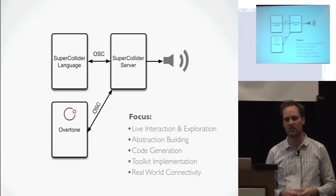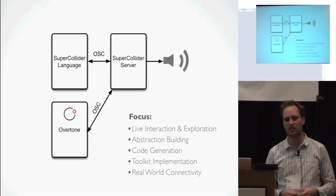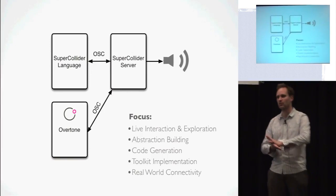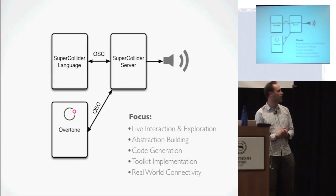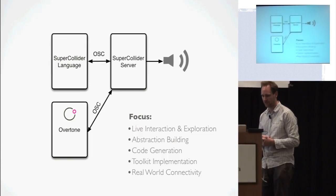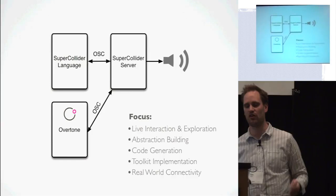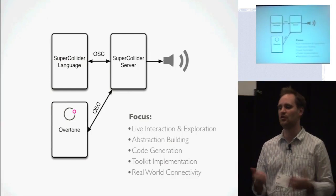We have a slightly different focus — we're interested in live interaction and exploration. We want to use the REPL to actually explore and work with sounds, think about different kinds of abstractions, do code generation, and generate our systems from higher level abstractions. We want to see Overtone as a toolkit so we don't have to use all of it — Clojure namespaces work well for that. And real world connectivity: we want to be able to connect with external devices very easily — serial ports, network protocols, databases, web services. Whatever you want to connect to make your music. The JVM offers this.